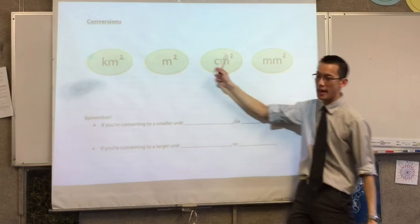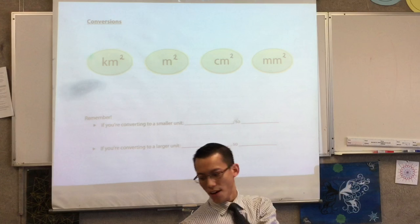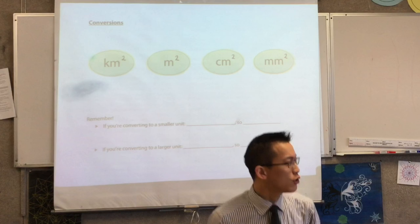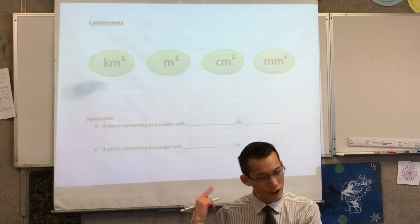Now as you're drawing that in, I want to ask the question: when we drew this diagram before, it was about conversions. You can see that up the top, right?